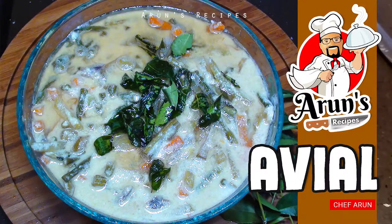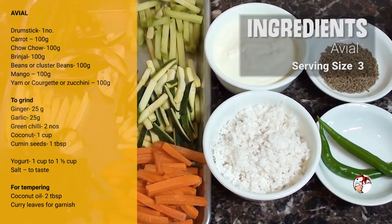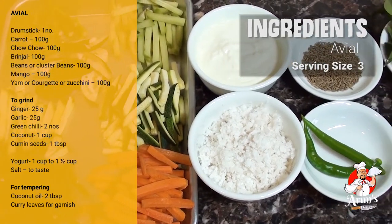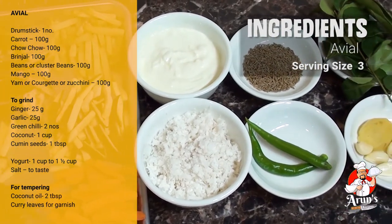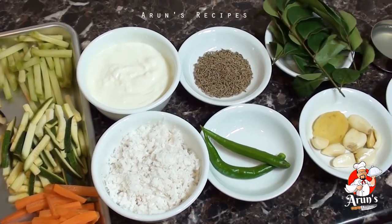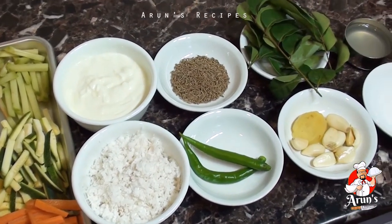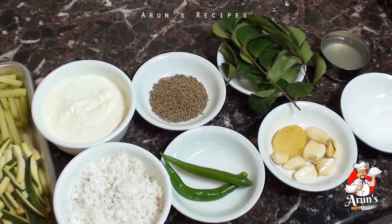This is what we're going to do: Avial. You can use various vegetables. The choice of vegetables is up to you — you can use different ingredients in this recipe. Cut all the ingredients to one size.